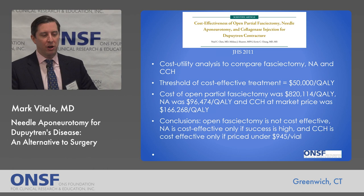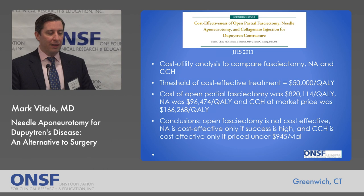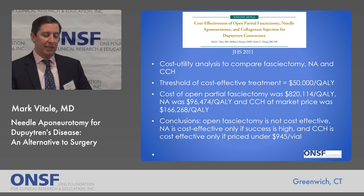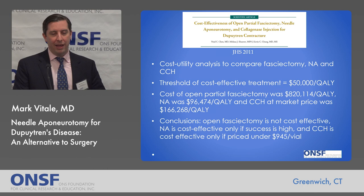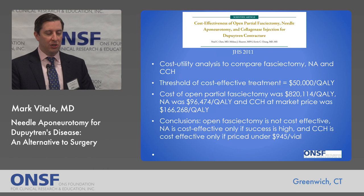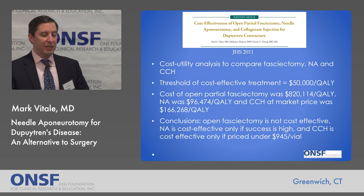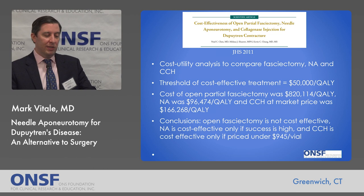Regarding cost, a cost-utility analysis compared surgery, fasciectomy, needle aponeurotomy, and collagenase using quality-adjusted life years. The generally accepted threshold for a cost-effective treatment is a gain of one quality-adjusted life year costing $50,000 or less. The cost of surgery was about $820,000 per quality-adjusted life year; collagenase at its current market price was also extremely costly at $166,000 per quality-adjusted life year; whereas needle aponeurotomy was the most cost-effective at $96,000 per quality-adjusted life year.